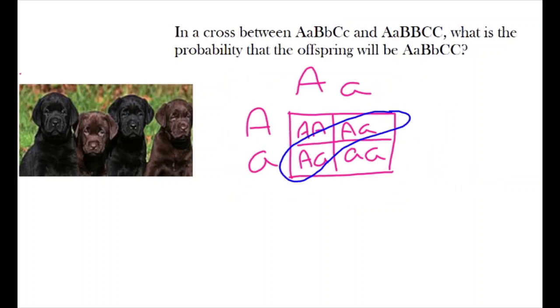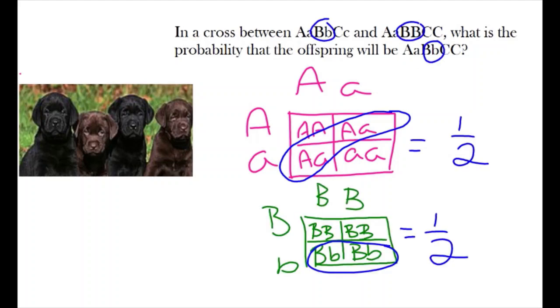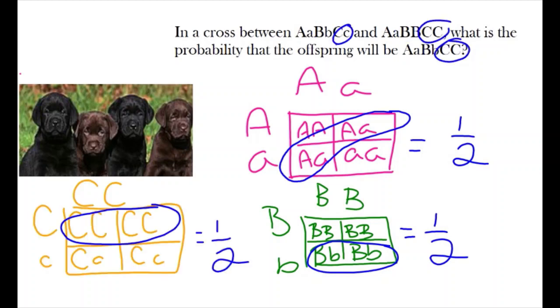If we start with the A alleles, we see that there is a one-half chance of the puppies having a heterozygous genotype. When we go on to the B alleles, we also see that there is a one-half chance of there being a heterozygous genotype. When we solve for the C alleles, we see another one-half probability, but this time for the homozygous dominant trait.